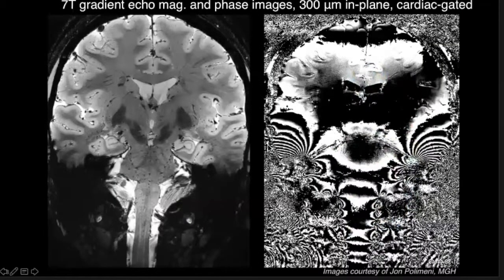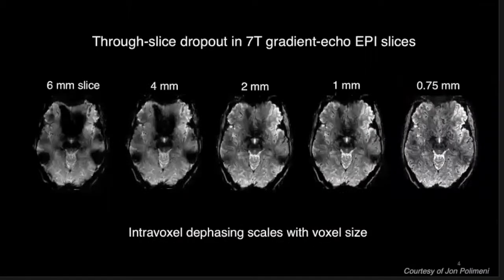And this gets worse at ultra-high field. This is just a nice image from John Polamani showing how bad the phase gets in a gradient echo image due to this B0 variation across the brain introduced by the air tissue interfaces. This also causes problems like dropout. If you have a thick slice, you get this very characteristic black spot from through-slice phasing. It gets better with thinner slices, but you can't always acquire with a 0.75 millimeter slice.